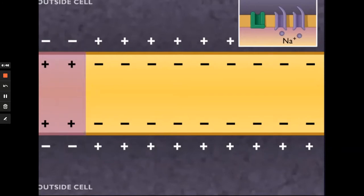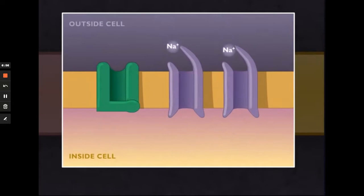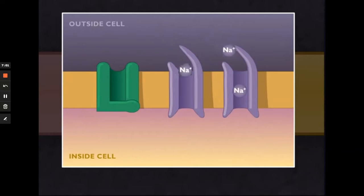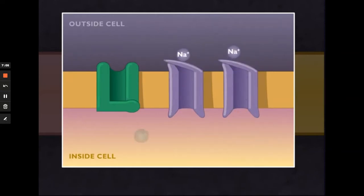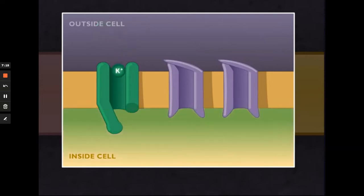Changes occur behind the action potential to restore the resting membrane potential: voltage-gated sodium channels close and voltage-gated potassium channels open, allowing a rapid flow of potassium ions out of the cell, repolarizing the membrane so the inside is again negative and outside positive. This is followed by use of sodium-potassium pumps to fully restore the resting membrane potential and reestablish proper concentrations of sodium and potassium ions.